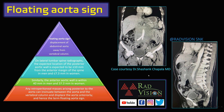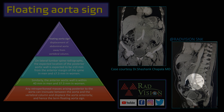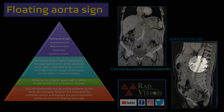The floating aorta sign is displacement of the aorta away from the vertebral column. On lateral lumbar radiographs, the normal expected location of the posterior aortic wall is less than 10 mm in men and less than 7.3 mm in women; the anterior aortic wall is within 40 mm in men and 37.3 mm in women. Any retroperitoneal mass causing elevation of the aorta away from the vertebral column should prompt suspicion of the floating aorta sign.